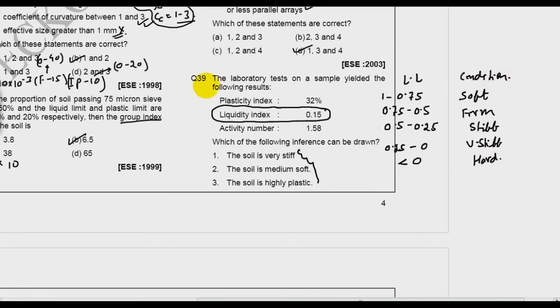That's why I put this question in level 2. So if you remember this table, then liquidity index is 0.15 and it falls in this category which is very stiff. So what is my answer? The soil is very stiff.